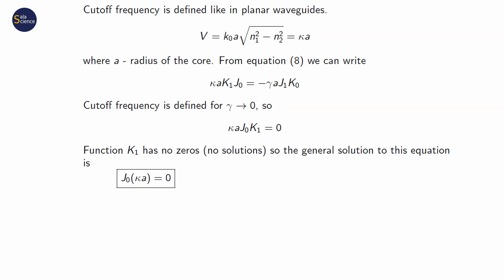As the energy cannot be infinite, it means that there is no energy in the core. After some simple operations, we end up with an equation where a Bessel function of the first kind and the zero's order must be equal to zero. This equation has infinite number of solutions. The first few are shown on the graph.